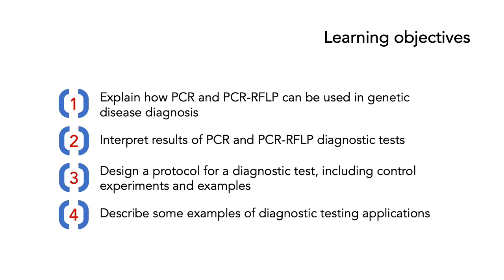For this particular presentation, we're going to have a number of learning objectives. The first is to explain how PCR and PCR RFLP can be used in genetic disease diagnosis. The second is to interpret the results of PCR and PCR RFLP diagnostic tests. The third is to design a protocol for a diagnostic test, including control experiments and examples. And the fourth is to describe some examples of diagnostic testing applications.